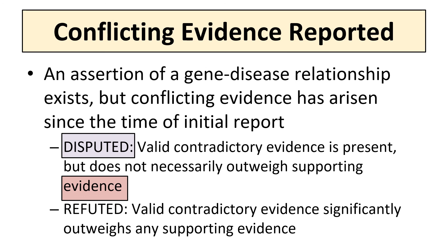Disputed, in which contradictory evidence need not outweigh existing evidence supporting the gene disease association; or Refuted, in which evidence refuting the role of the gene in the specified disease has been reported and significantly outweighs any evidence supporting the role. These designations are to be applied at the discretion of the clinical domain experts after thorough review of available evidence.